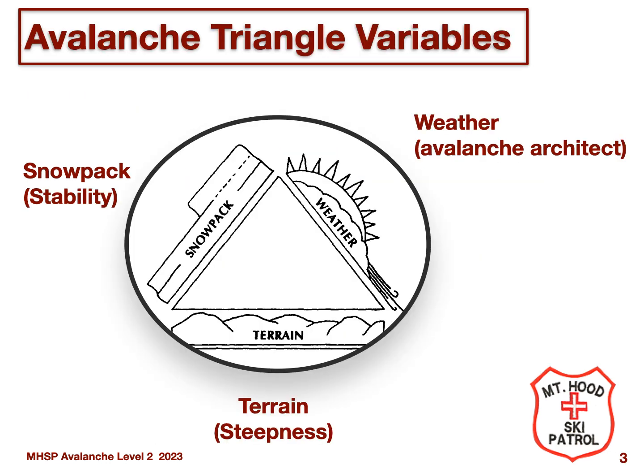By way of review, this slide shows our old friend the Avalanche Triangle. This is the basic model you learned in AVI 1 to show the relationship between the variables that determine avalanche risk: snowpack, weather, and terrain. Starting with Module 2, we are going to do a very deep dive into these variables. But for now, let's just blow off the cobwebs and review the triangle.